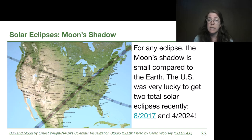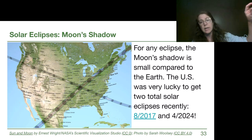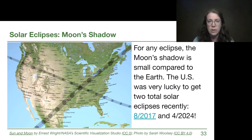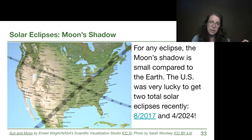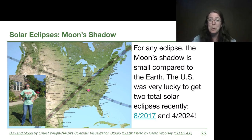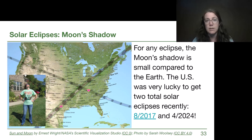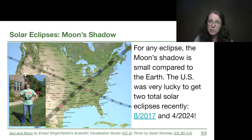This happened twice recently — in August of 2017, where totality went from Oregon and Washington down through Georgia and South Carolina, and very recently in April of 2024, where it started in Mexico and went all the way up through Maine and Canada. I was very lucky to see both of these total eclipses. In 2017, my whole family descended upon my great-aunt's house and we made it a family reunion to see the eclipse in totality. In 2024, I went again with my family in the San Antonio area, and although it was a little cloudier, we got to see the whole partial eclipse going into totality and all of totality before the clouds rolled in.